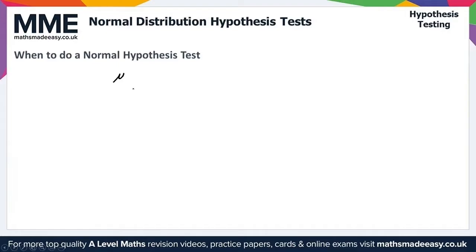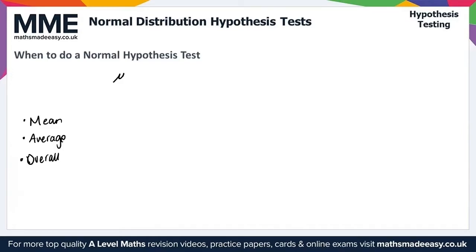This gives us a key difference we can use to determine what test to do and when. Since normal hypothesis tests test a mean parameter, we should look out for words such as mean, average, and overall. These are big clues that you should use a normal hypothesis test. The situation and context should also help you — if you would model it with a normal distribution, then you will want to use a normal hypothesis test.